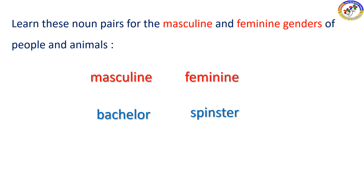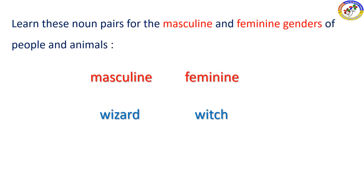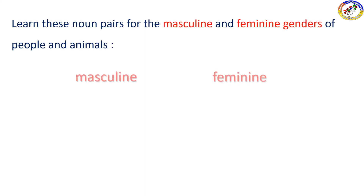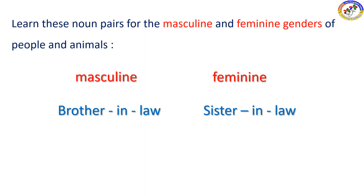Bachelor and spinster — bachelor is masculine and spinster is feminine. Wizard and witch — wizard is masculine and witch is feminine. Brother-in-law is masculine and sister-in-law is feminine.